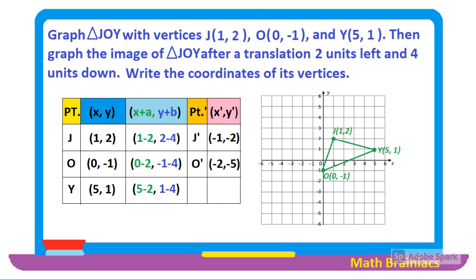For point Y: 5 − 2 = 3 for the x coordinate, and 1 − 4 = −3 for the y coordinate. So Y prime is (3, −3). Let us plot the translated points: J prime at (−1, −2), O prime at (−2, −5), and Y prime at (3, −3). Connecting the black dots with a straight line, you can see that the green triangle is translated 2 units left and 4 units down.